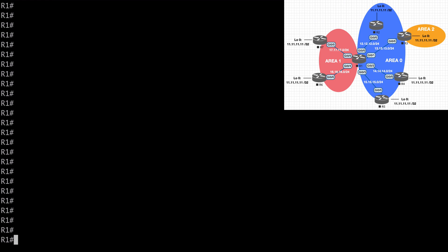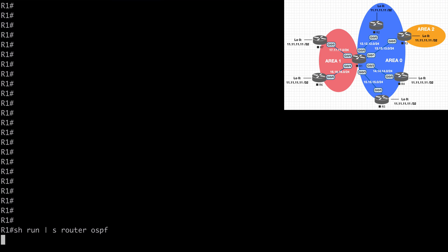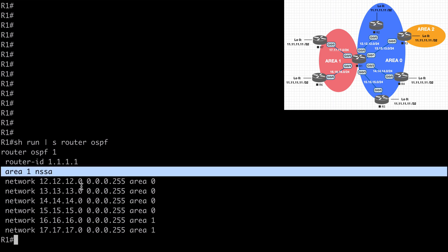Let's look at this in a live lab to demonstrate OSPF path preference. In our topology, every router is configured with a loopback address of all 11s. This will allow us to easily see path preference for this prefix shared from all of our routers. On R1, let's say show run pipe section router OSPF to look at our configuration. We have a network statement for each of our neighbors R1 through R5 in area 0, and R6 and R7 in area 1. Also notice that area 1 is configured as a not-so-stubby area.